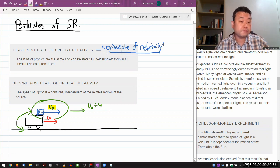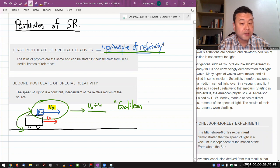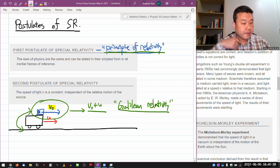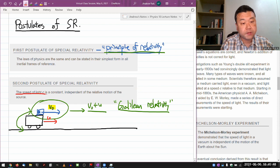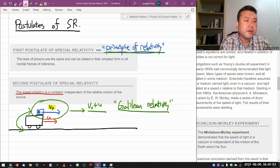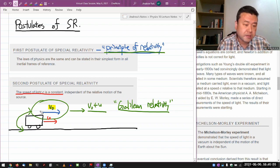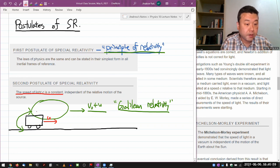And this is all consistent with the principle of relativity and the relativity that we are used to thinking of before the ideas of special relativity. This is, in fact, given the name Galilean relativity, as in this is the kind of relativity that Galileo would have thought of.